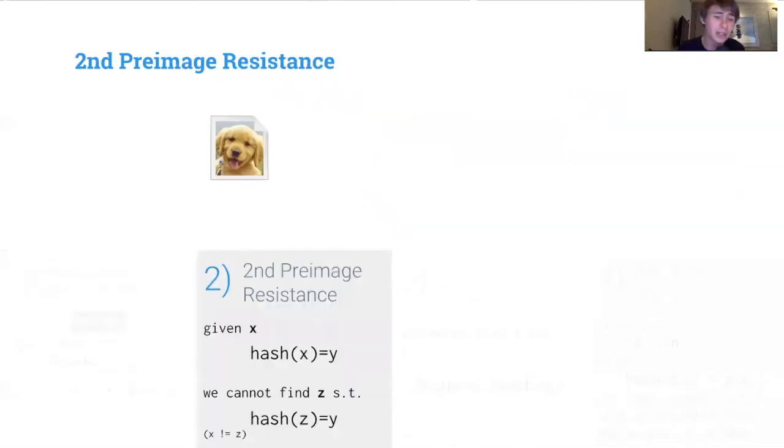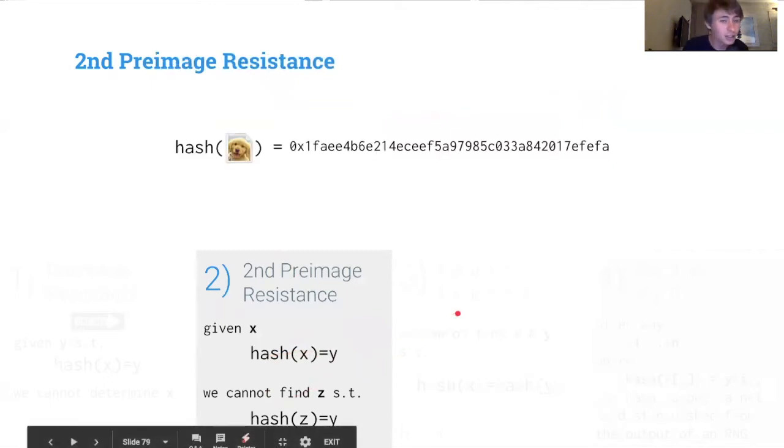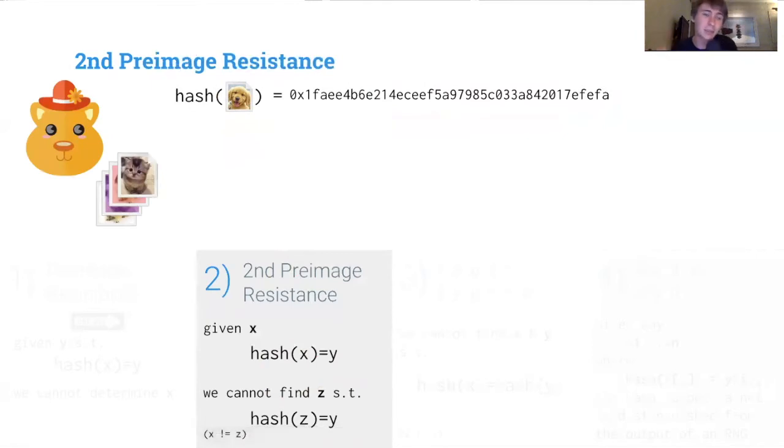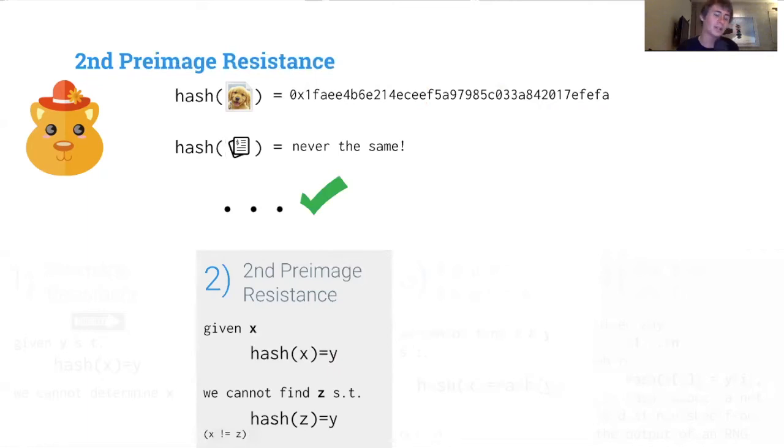Our second property is second pre-image resistance. What this means is if we are given a particular pre-image, we cannot find another pre-image which has the same hash output. If hash of x equals y, we cannot find z such that hash of z equals y. Let's look at what this means. We've got Alice, and Alice has computed the hash of our doge, and Alice has a bunch of other images, like this cute kitty. We notice that this output does not equal this output, and we can't find an output that does.